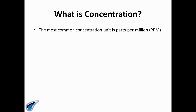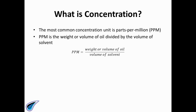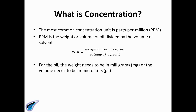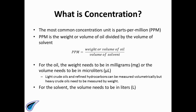The most common concentration unit is parts per million, ppm. Ppm is the weight or volume of oil divided by the volume of solvent. For the oil, the weight needs to be in milligrams or the volume needs to be in microliters. Light crude oils and refined hydrocarbons can be measured volumetrically, but heavy crude oils need to be measured by weight. For the solvent, the volume needs to be in liters.